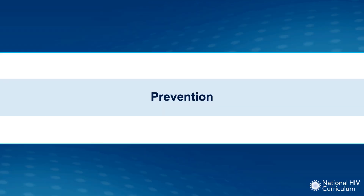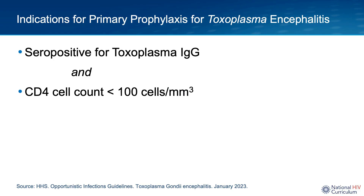Now let's discuss how to prevent toxoplasmosis if you have a history of prior exposure. For people with HIV, you would initiate primary prophylaxis for toxoplasma encephalitis if they have a positive serum toxo-IgG and a CD4 count less than 100. You need both of these criteria to be eligible to receive primary prophylaxis.